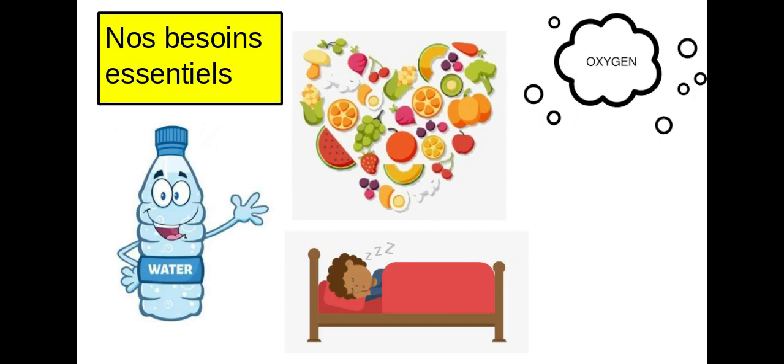Voici nos besoins essentiels. So here are essential needs. These are the things that we need to survive. Une personne a besoin de l'eau, de la nourriture, de l'air, et de sommeil. So people need water, food, air to breathe, and sleep. These are all things that keep our bodies strong and help us to grow.